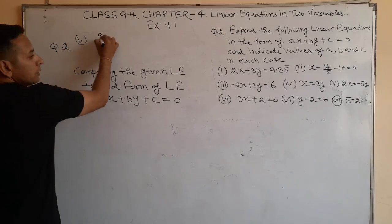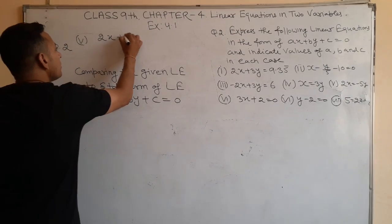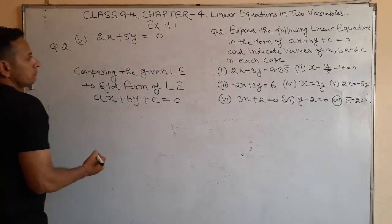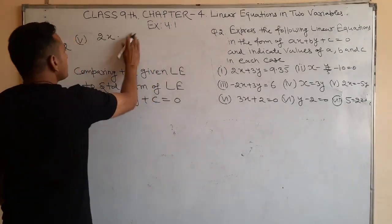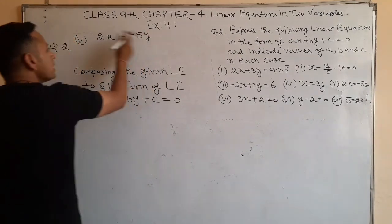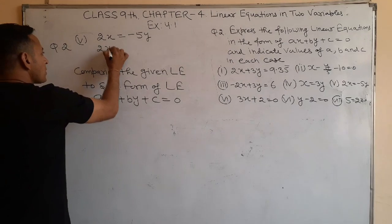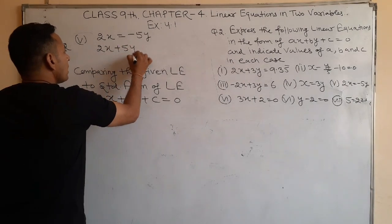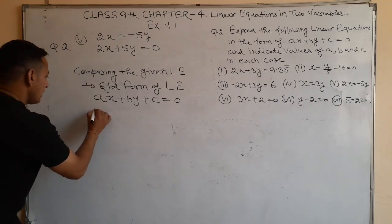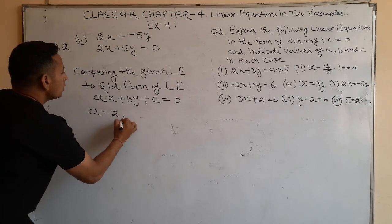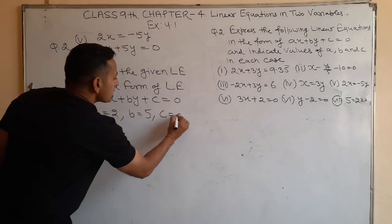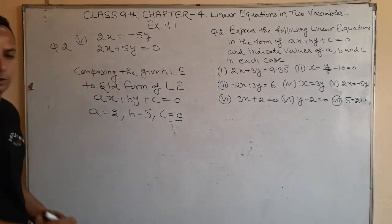Fifth part: 2x plus 5y is equal to 0. Transposing: 2x plus 5y is equal to 0. Comparing with standard form: a equals 2, b equals 5, and since there is no constant term, c equals 0.